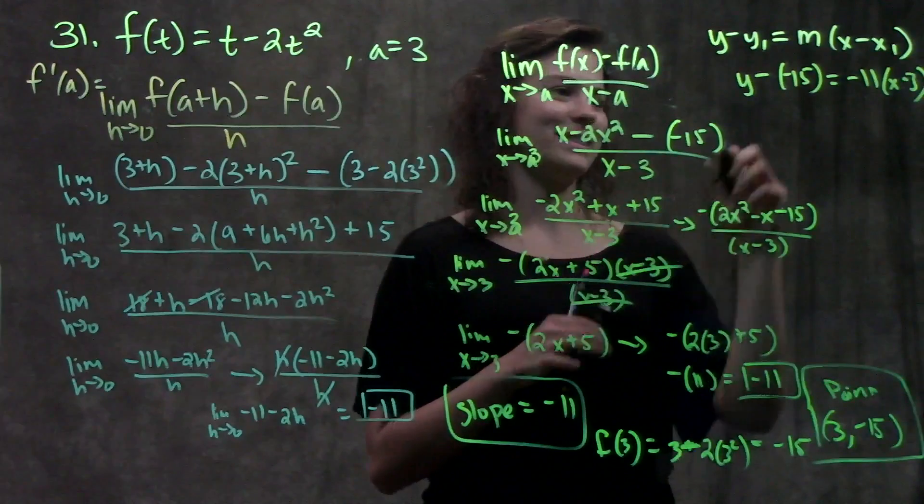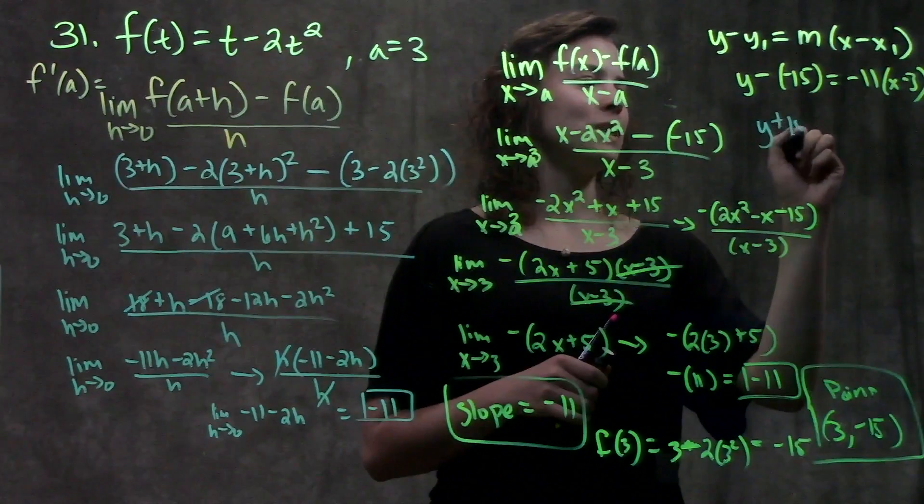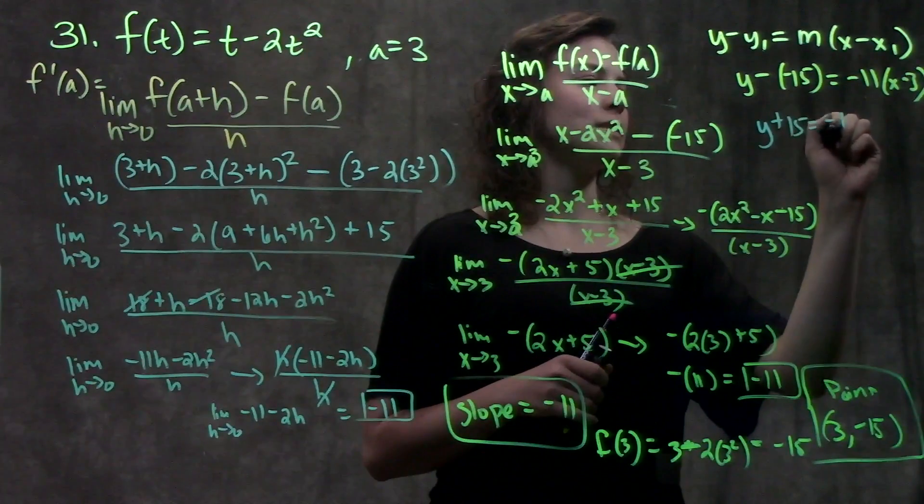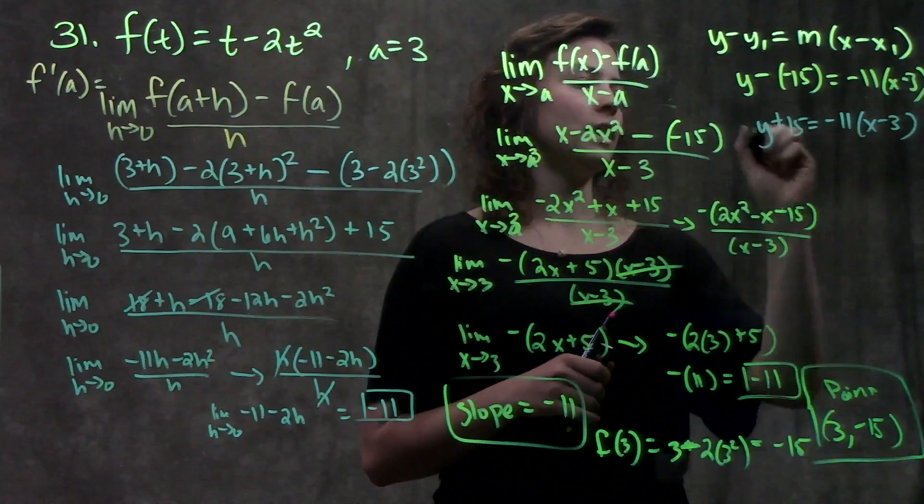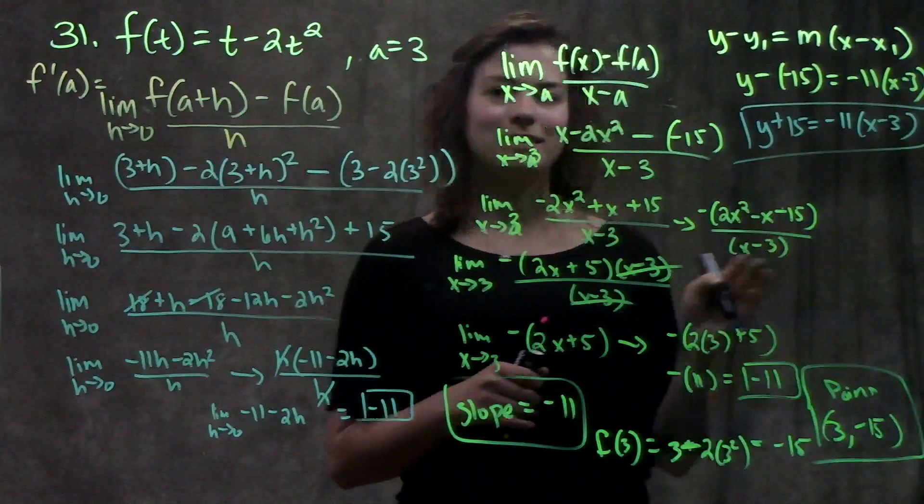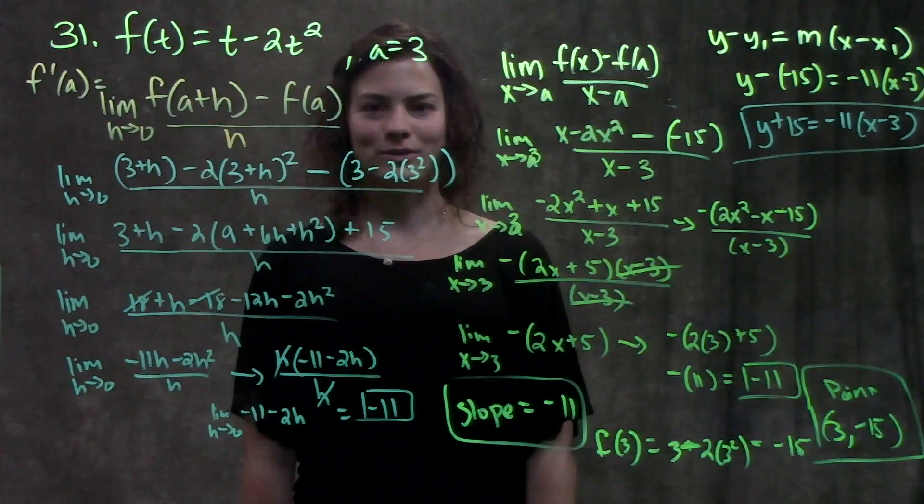And that's your final answer. You get y plus 15 equals minus 11 times (x minus 3). And that's the equation of the tangent line at the point a equals 3.